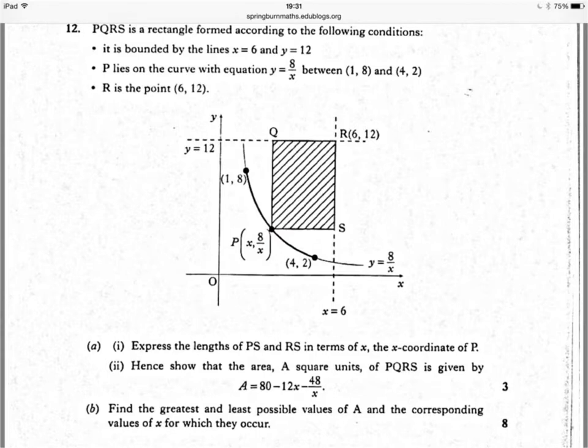It is bounded by the lines x equals 6 and y equals 12. P lies on the curve with equation y equals 8 over x between 1, 8 and 4, 2. R is the point 6, 12.